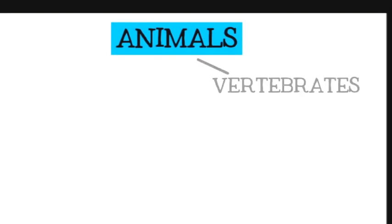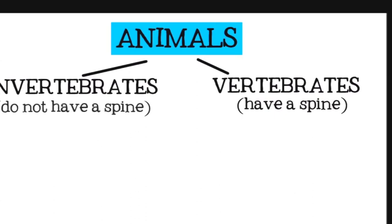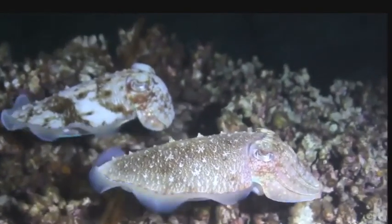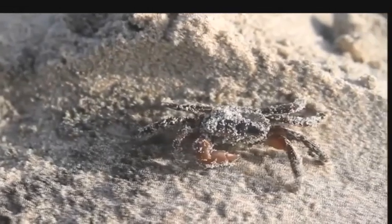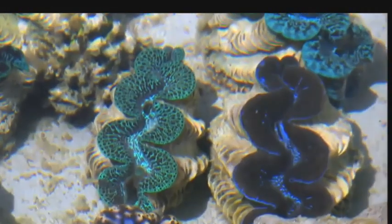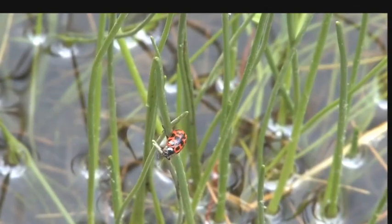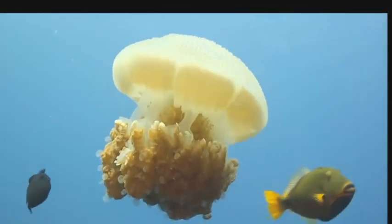The two largest groups of animals are vertebrates and invertebrates. Vertebrates are animals that have spines or backbones. Invertebrates are animals that do not have backbones. Most of the animals in the world are invertebrates. Examples include octopus and squid, insects, arachnids, starfish and sea urchins, jellyfish, crabs and lobsters, clams, and many more. On land, most invertebrates are fairly small, but in the water they may grow to much larger sizes.